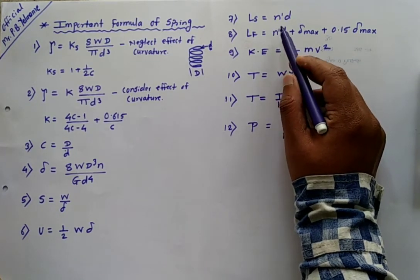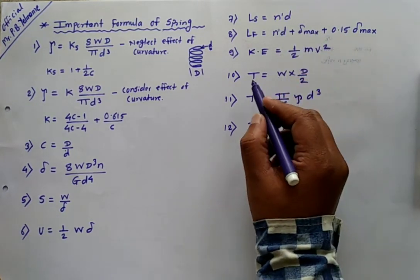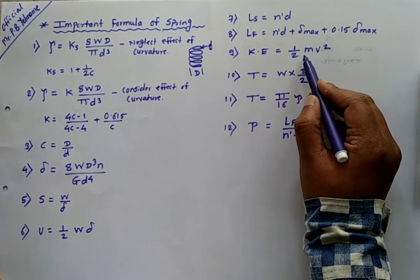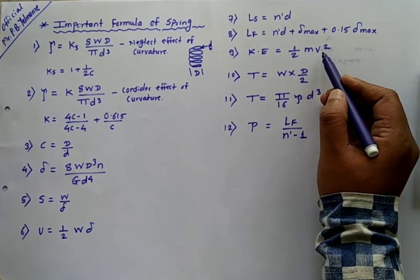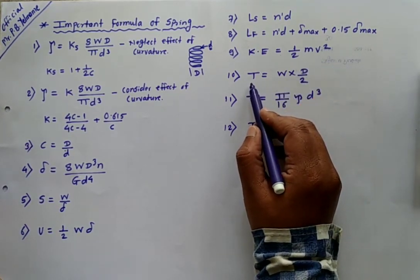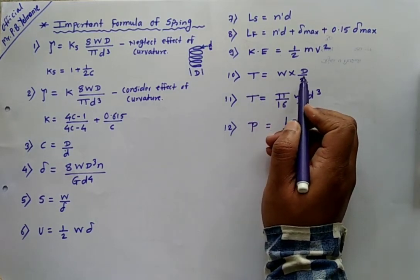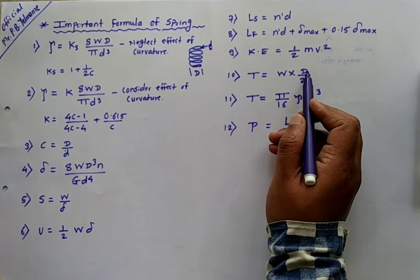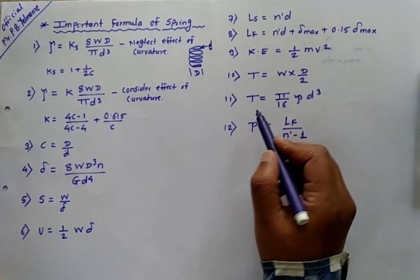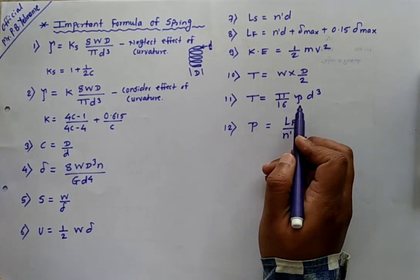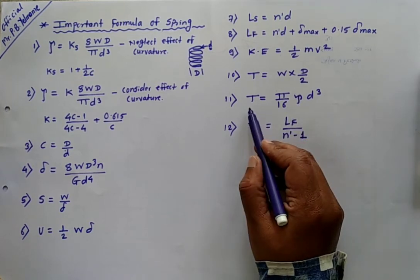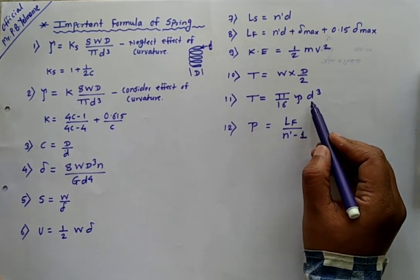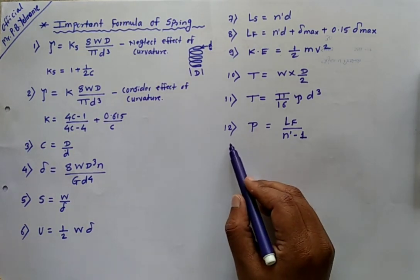Kinetic energy is (1/2)mv², where m is mass and v is velocity. Torque is calculated using the basic formula: T = force × perpendicular distance. In the case of a spring, force is W and perpendicular distance is the mean diameter divided by 2 (D/2). Torque is also calculated in terms of shear stress using the torsional equation: T = (π/16) × tau × d³, where tau is the shear stress and d is the wire diameter.